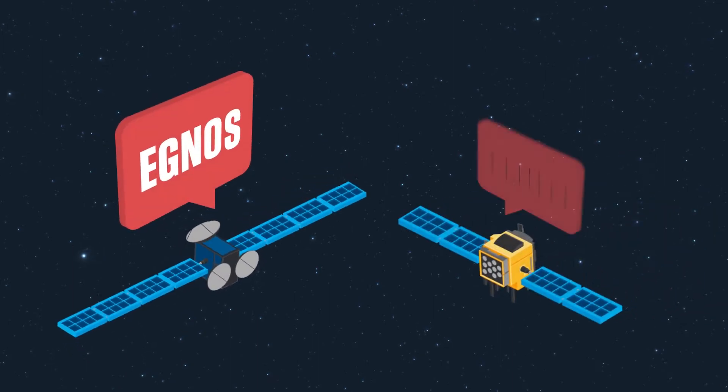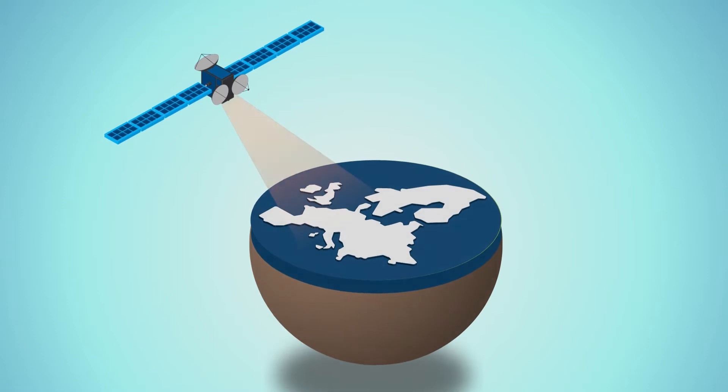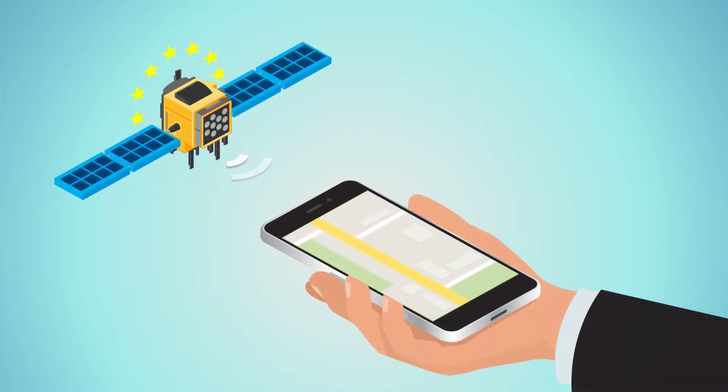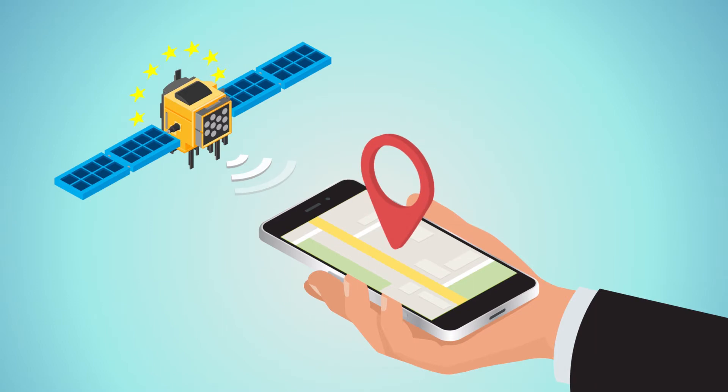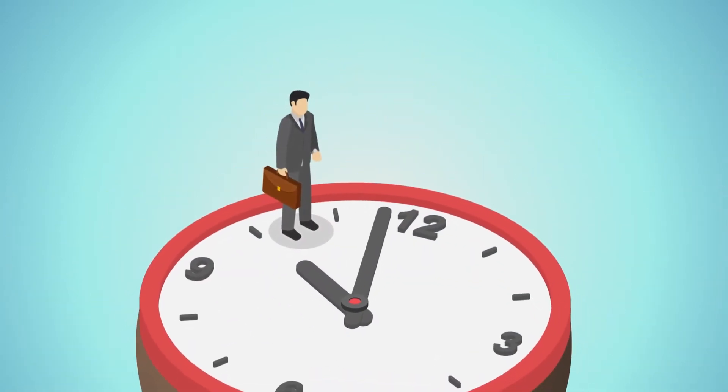First of all, let's look at what these two systems are. EGNOS is Europe's satellite augmentation system that makes GPS a lot more reliable and accurate in Europe. GALILEO is Europe's independent, civilian-controlled, global satellite navigation system. Now back to our two key questions.